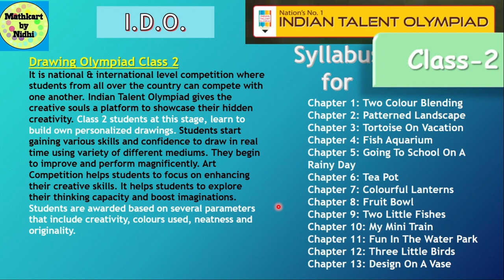For Class 2, it is at national and international level of competition. It allows students to show hidden creativity and gain various skills and confidence. Students are awarded based on several parameters including creativity, color used, neatness, and originality. The syllabus for Class 2 is: two-color blending, patent landscape, tortoise on vacation, fish aquarium, going to school on a rainy day, teapot, colorful lanterns, fruit bowl, two little fishes, my mini train, fun in the water park, three little birds, and design on a vase.